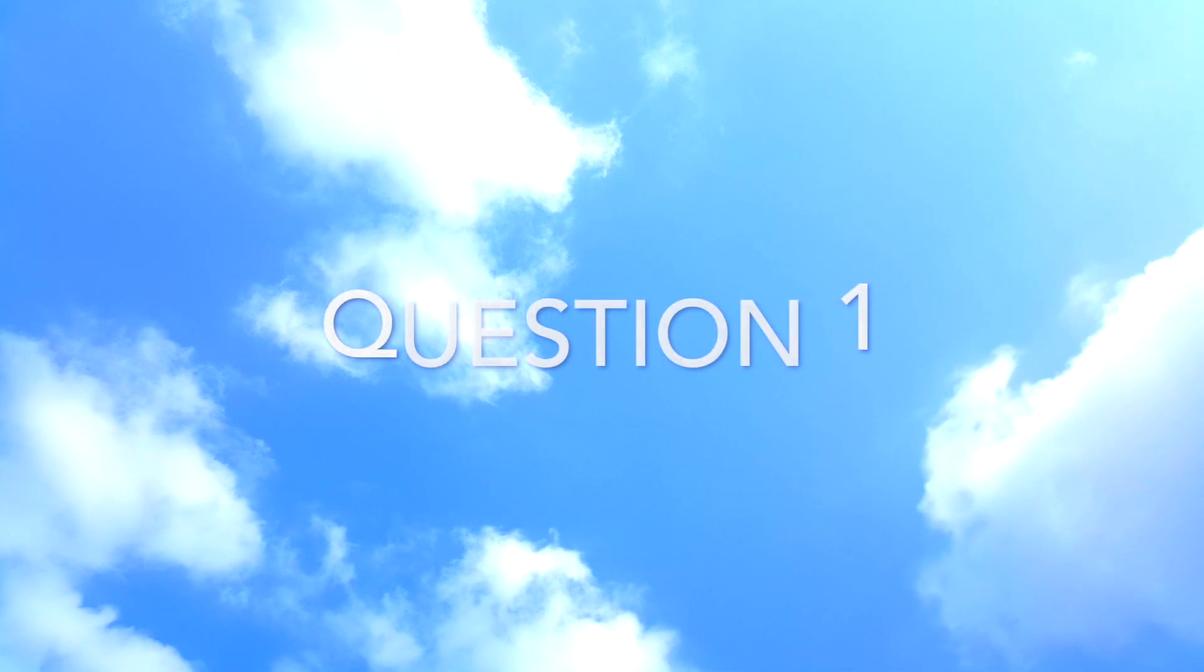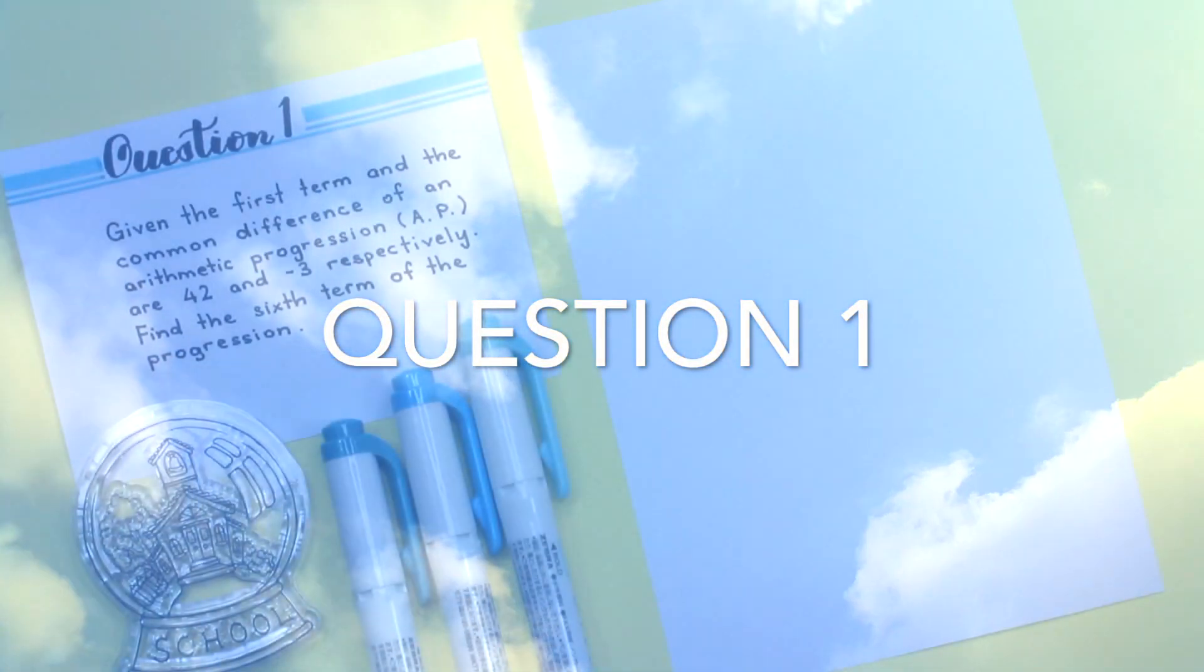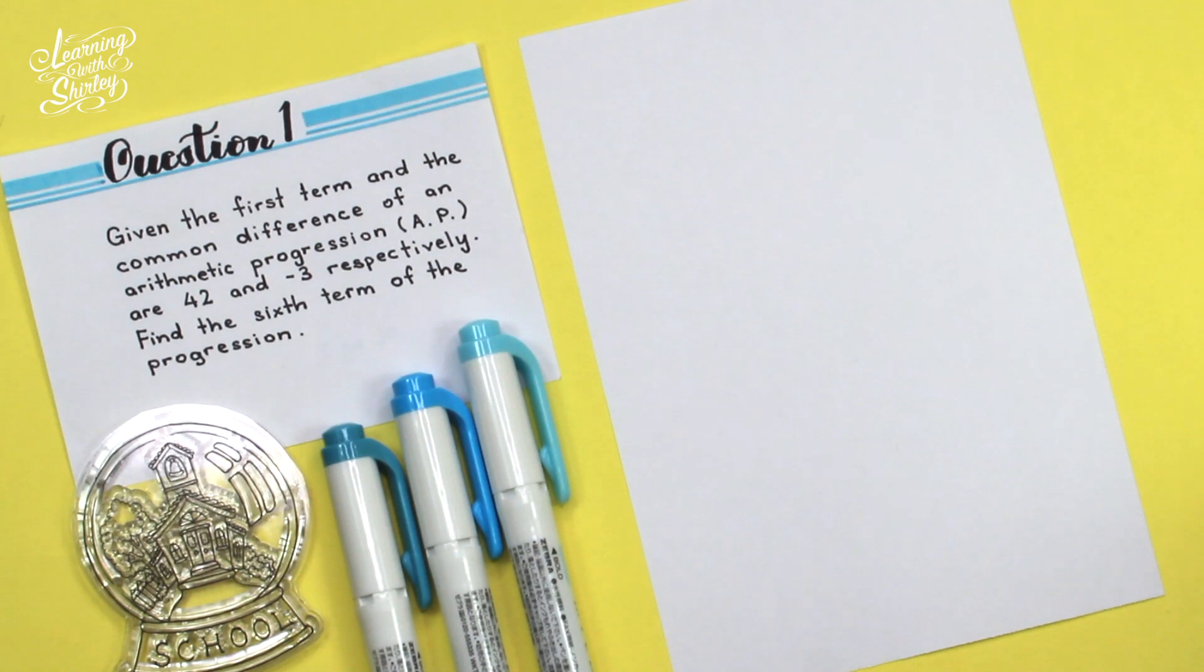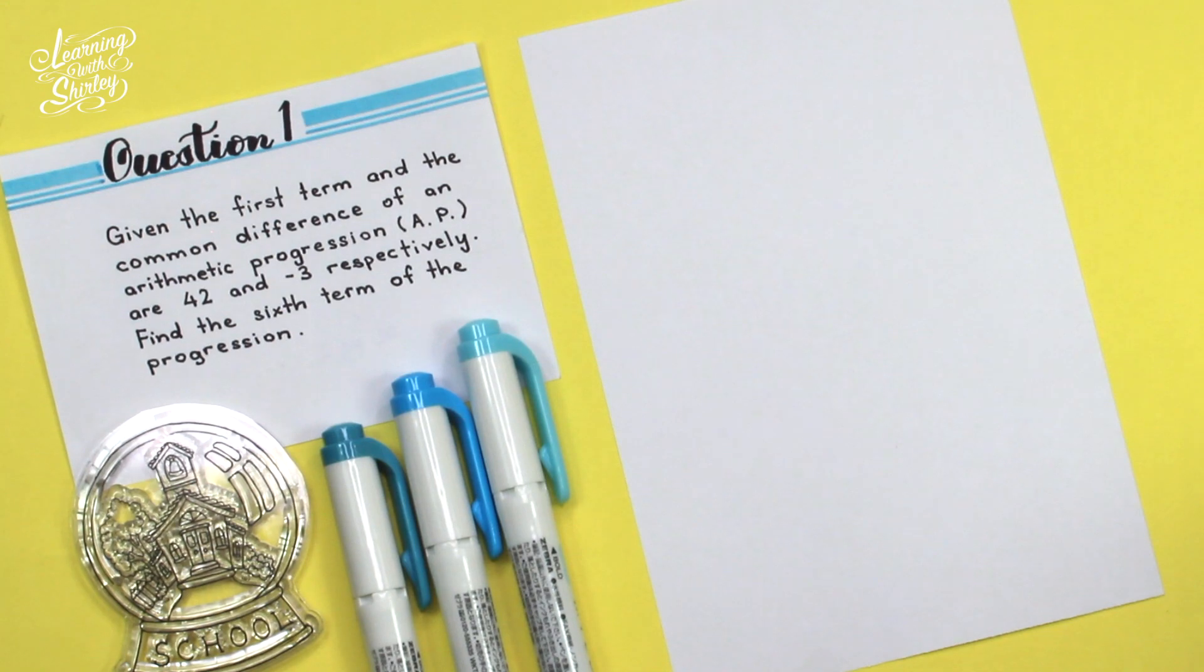Let's take a look at the first question. For question number one, given the first term and the common difference of an arithmetic progression AP are 42 and negative 3 respectively, find the sixth term of the progression.